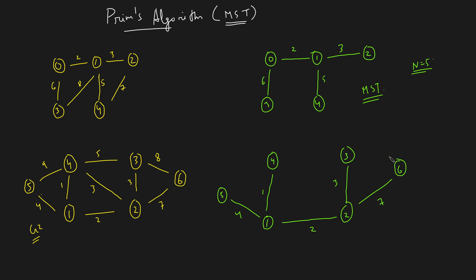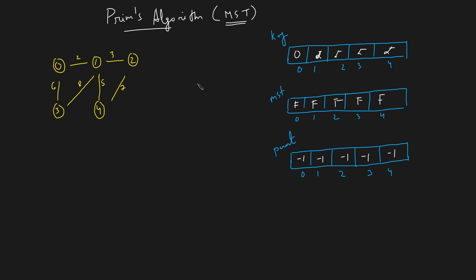This is the minimum spanning tree for this graph. The intuition is simple: starting from a node, just keep attaching the smaller edge weight nodes to grow your tree. Keep adding smaller edge weights to keep the spanning tree as minimal as possible. To implement Prim's algorithm, we require three arrays: the key array (initialized to infinity except index 0), the MST array (all false), and the parent array (all minus one).